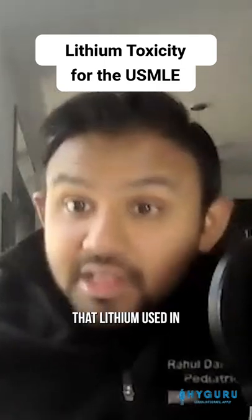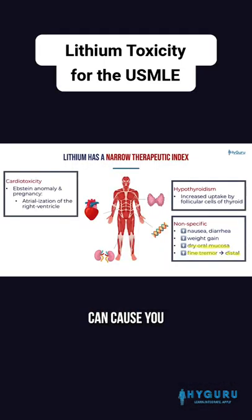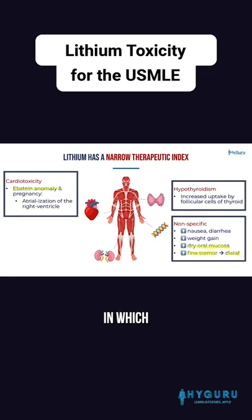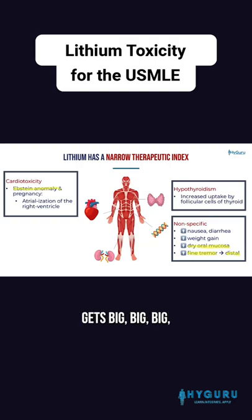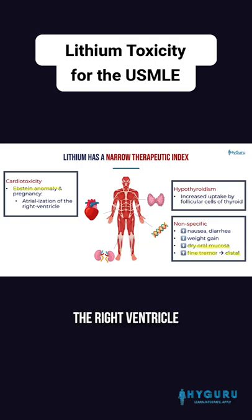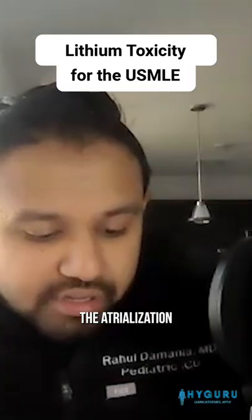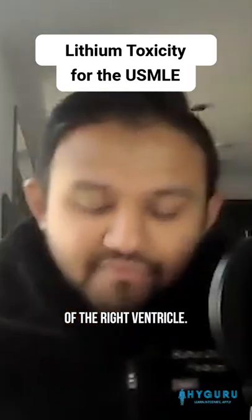Remember that lithium use in pregnancy can cause some element of cardiotoxicity. We call that Ebstein's anomaly, in which you have the tricuspid leaflets kind of downwardly displaced, and so the right atrium gets big, and you have the right ventricle then essentially acting like your atrium. So that's what they call the atrialization of the right ventricle.